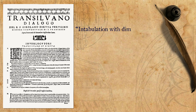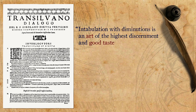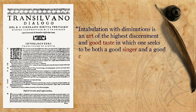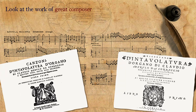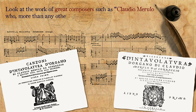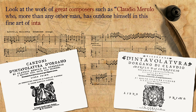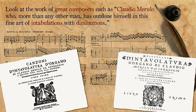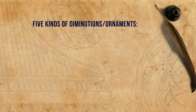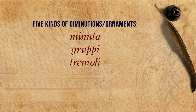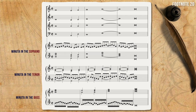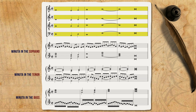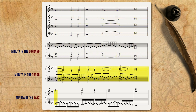Diruta writes: 'Intabulation with diminutions is an art of the highest discernment and good taste, in which one seeks to be both a good singer and a good contrapuntist.' In order to teach this art, Diruta first generally recommends that readers look at the work of great composers such as Claudio Merulo, who more than any other man has outdone himself in this fine art of intabulations with diminutions. Then, for simplicity's sake, he suggests focusing on five kinds of diminutions or ornaments: Minuta, Gruppi, Tremoli, Clamazioni, and Accenti. Minuta are diminutions made up of 8th or 16th notes, mostly in stepwise motion, that may appear in each of the voices of a composition. In Diruta's demonstration, he took a simple four-part progression and showed how it may be intabulated with Minuta in the different voices.